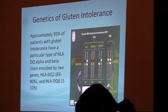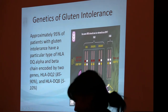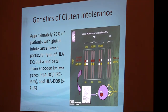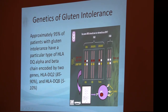Approximately 95% of people who have gluten intolerance carry one or both of these genes. HLA-DQ2 is the main gene, found in approximately 85 to 90% of people with gluten intolerance and celiac disease. HLA-DQ8 is a minor gene. There are differences in clinical manifestation based on which gene you carry — if you have HLA-DQ2, you're much more prone to osteoporosis and rheumatoid arthritis.